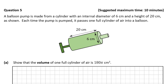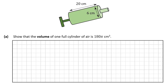At the start of the question, we're told that a balloon pump is made from a cylinder with an internal diameter of 6 centimeters and a height of 20 centimeters, as shown in the diagram. We're told that each time the pump is pumped, it passes one full cylinder of air into a balloon. The first thing we're asked is to show that the volume of one cylinder of air is 180π centimeters cubed.